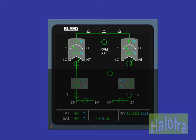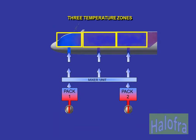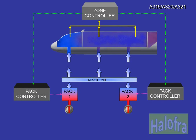Having discussed the air conditioning packs, we will now look at how temperature and flow regulation is achieved throughout the aircraft. The three outputs from the mixing unit feed three separate aircraft zones: cockpit, forward cabin, and aft cabin. A zone controller monitors the temperatures of the three zones and sends signals to the pack controllers to set the air temperature delivered by the packs.